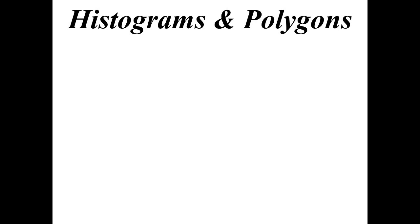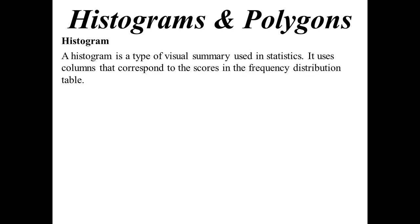Well, let's look at these things, histograms and polygons. They're the two most common ways of visually representing the data. A histogram, remember, is like a column graph.